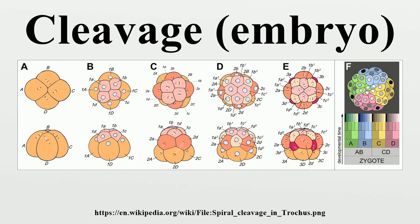Meroblastic: In the presence of a large amount of yolk in the fertilized egg cell, the cell can undergo partial, or meroblastic, cleavage. Two major types of meroblastic cleavage are discoidal and superficial. Discoidal: In discoidal cleavage, the cleavage furrows do not penetrate the yolk. The embryo forms a disc of cells called a blastodisc on top of the yolk. Discoidal cleavage is commonly found in monotremes, birds, reptiles, and fish that have telolecithal egg cells.